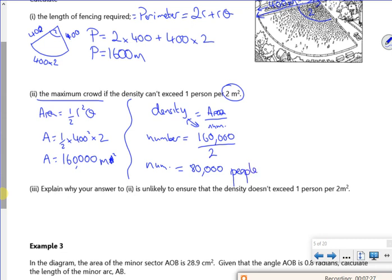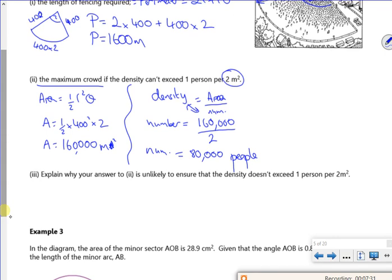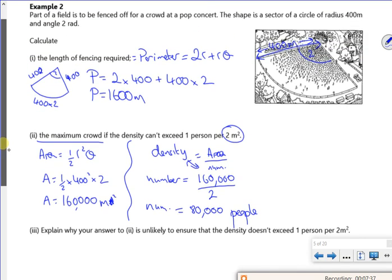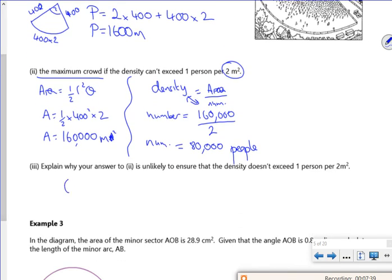So it says, explain why your answer to part two is unlikely to ensure that the density doesn't exceed one person per 2 m². If you look at the picture, everybody crams to the front. So that's why.